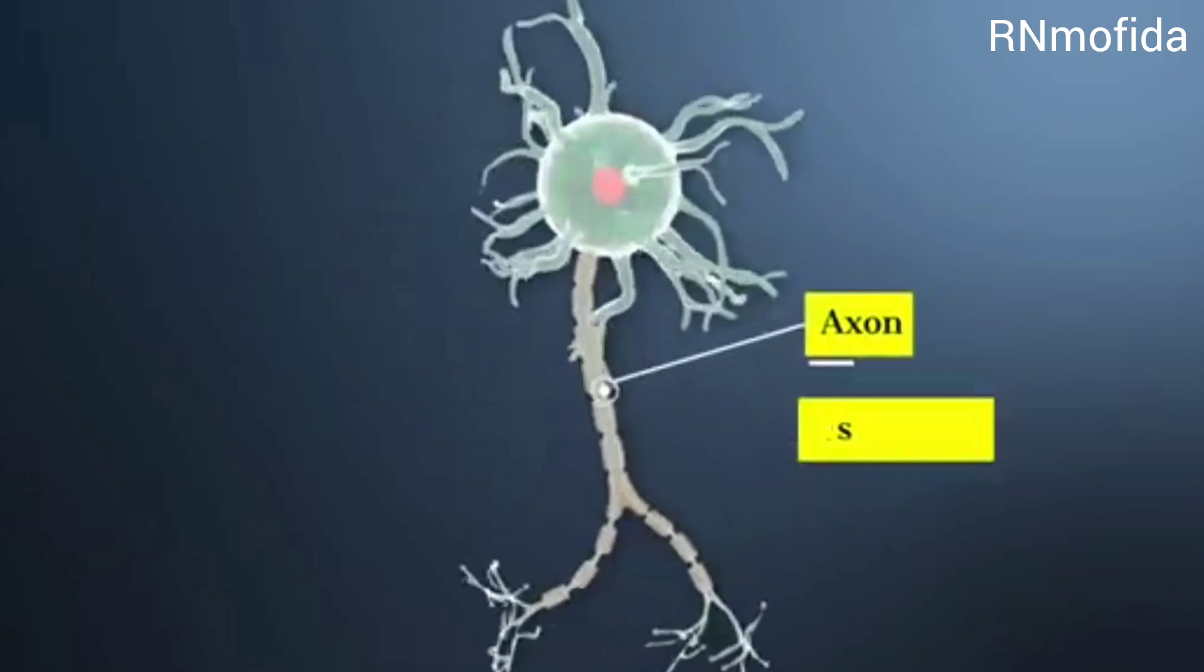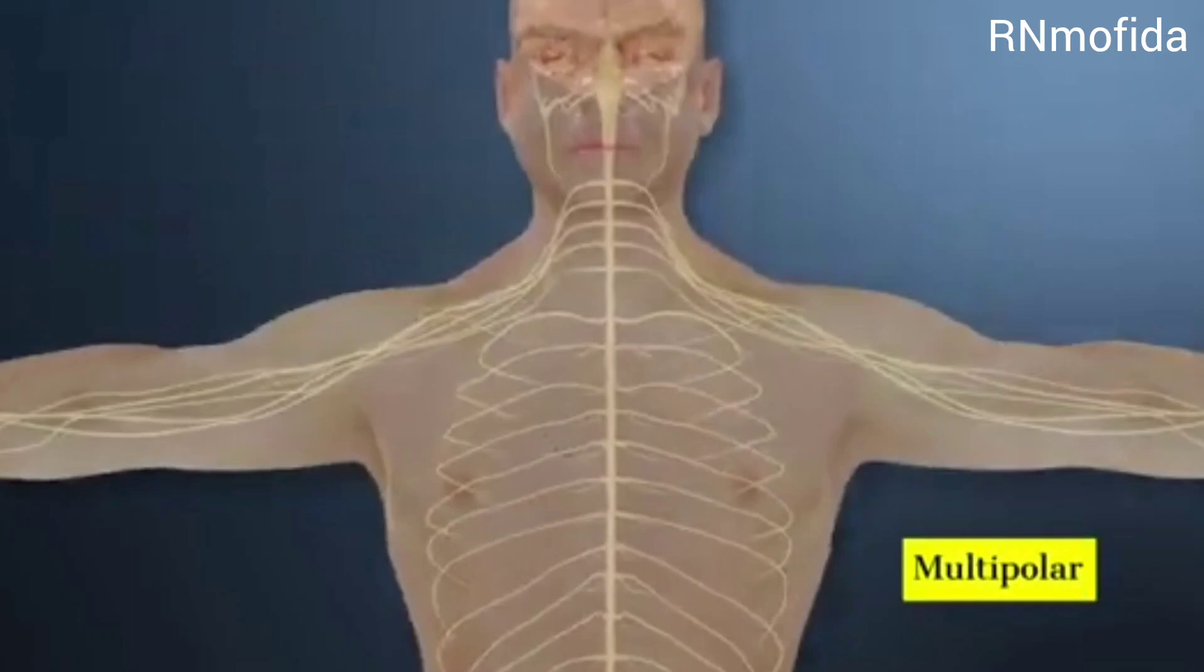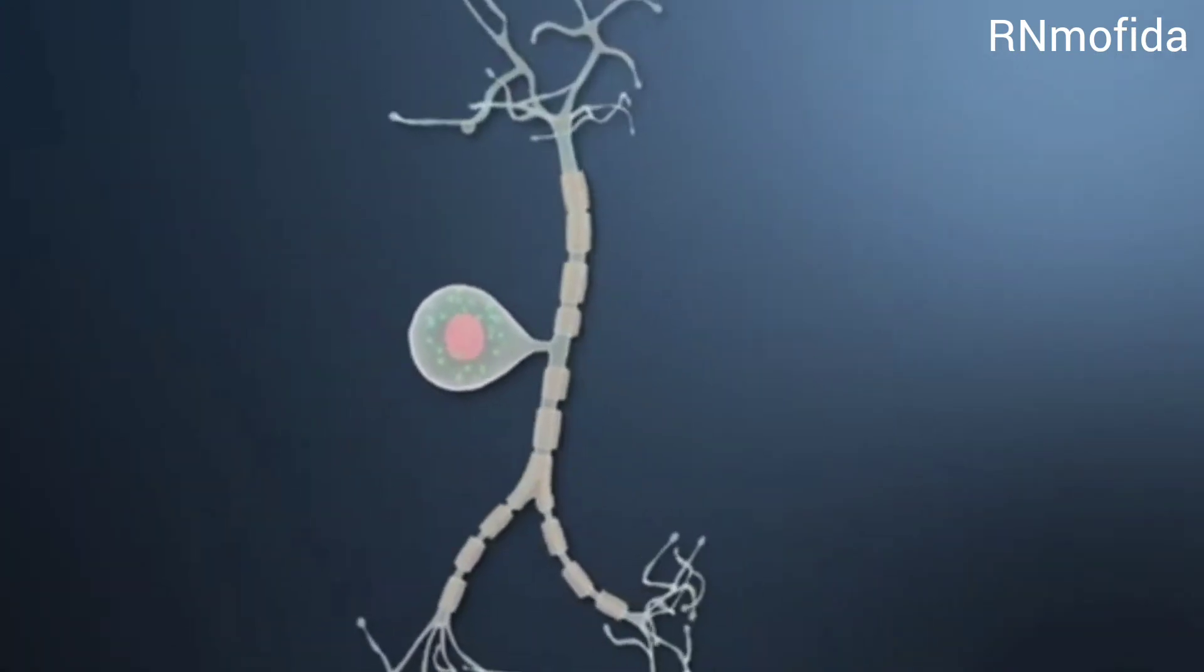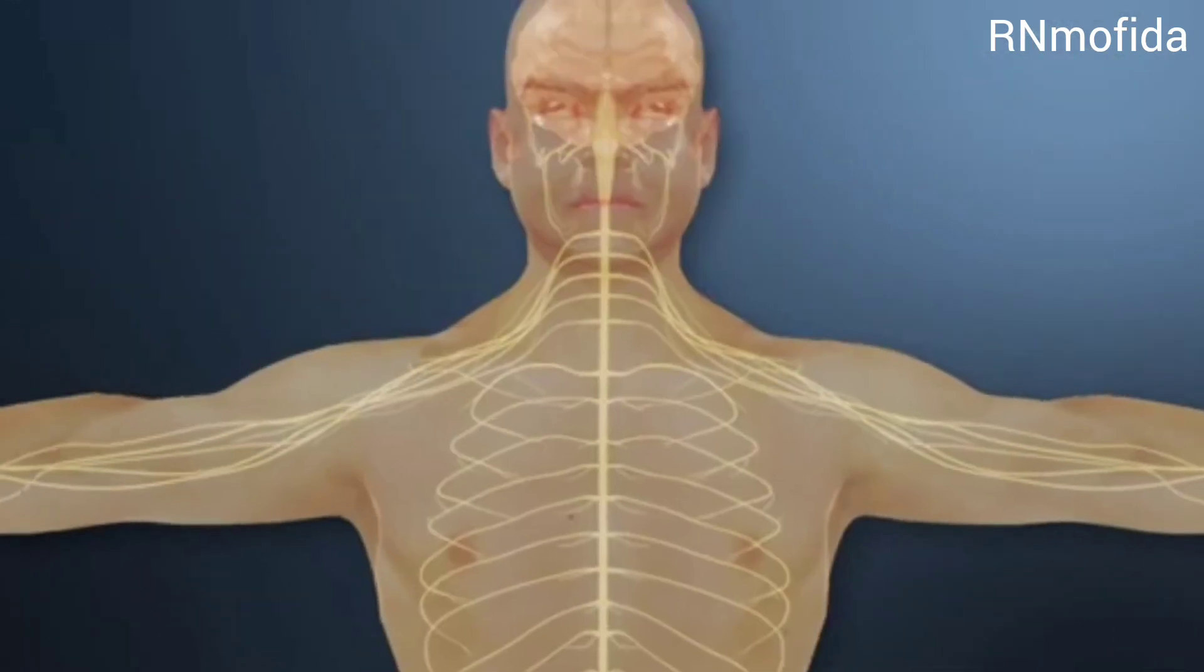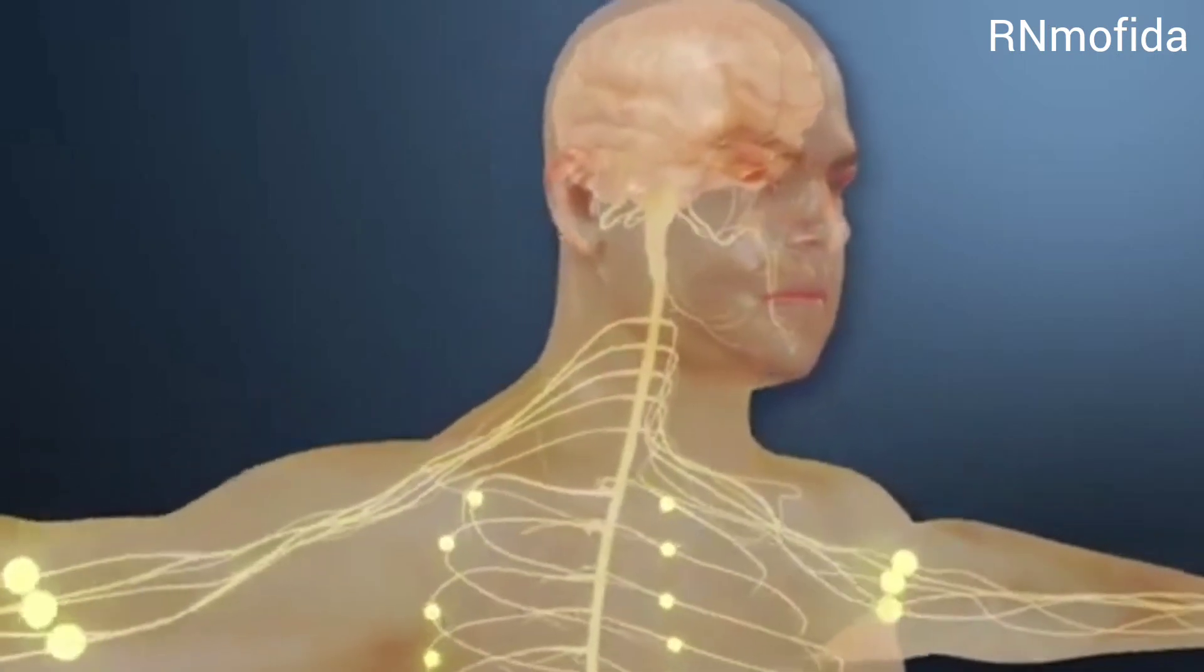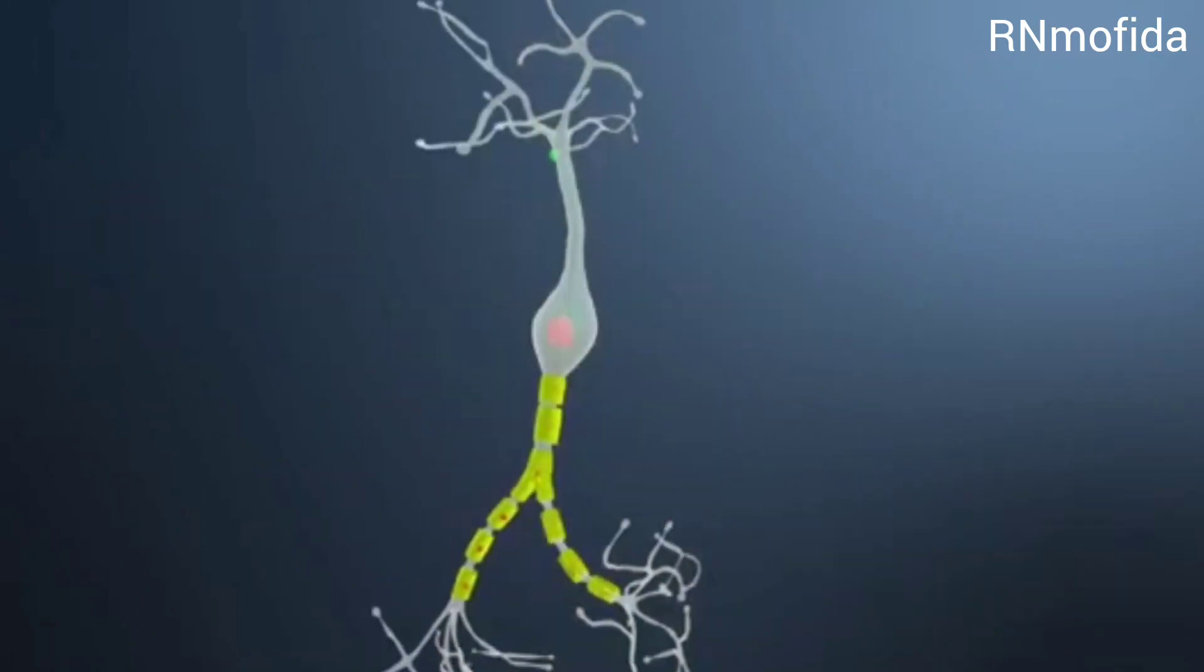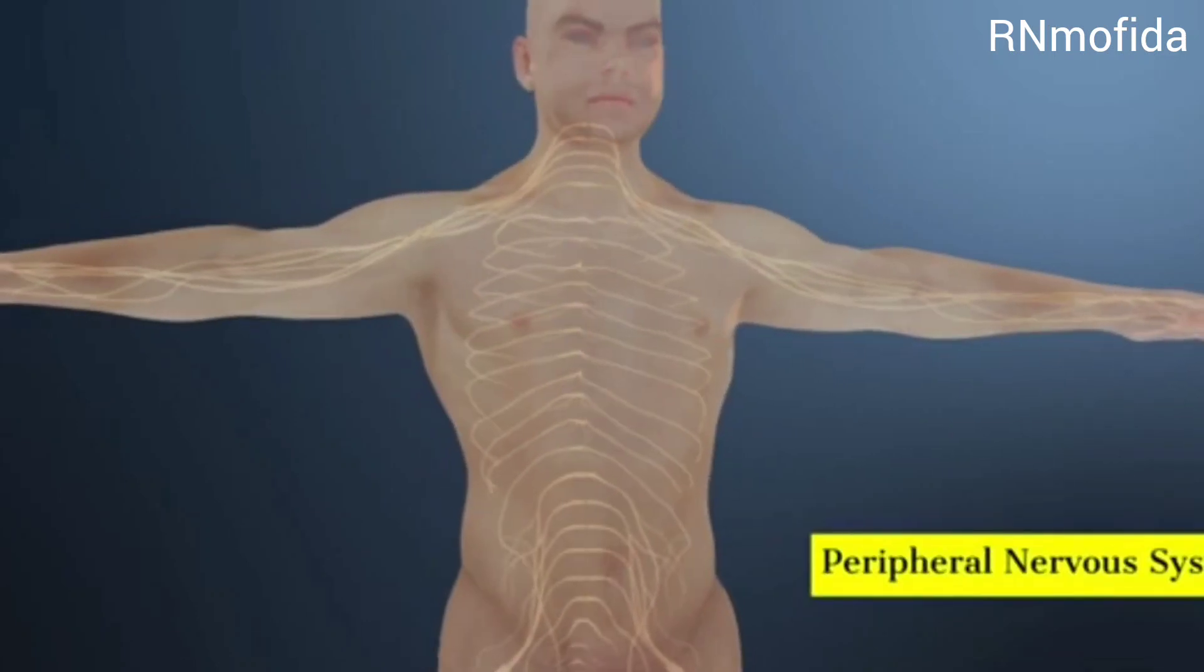Based on functions, neurons are of three types. First are sensory neurons that send impulses from the sensory organs to the CNS. Second are motor neurons that transmit signals from CNS to the effector organs like muscles, glands, etc. Third are interneurons that are present in the central nervous system, mainly connecting sensory axons and motor axons.